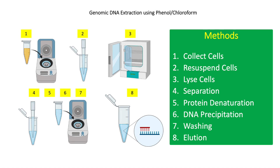For step one, collect 1.5 ml of bacterial suspension from the broth culture using microcentrifuge tubes and spin at 12,000 g for 2 minutes. After centrifugation, discard the supernatant.